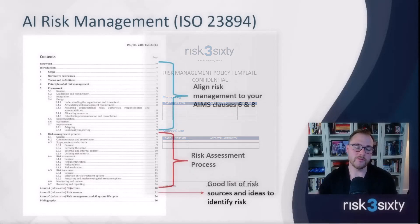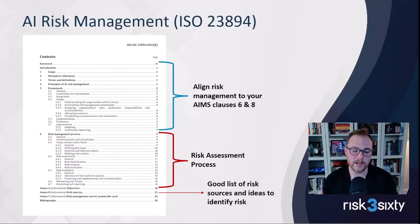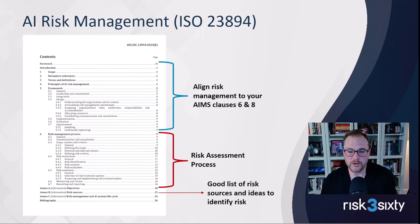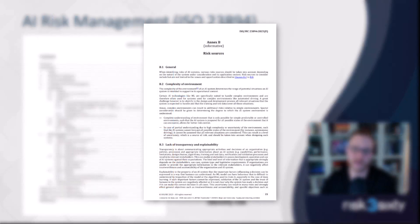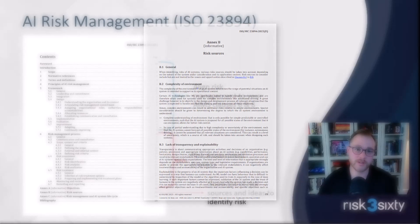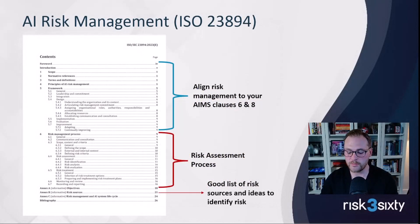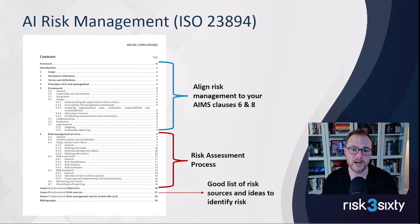One of my favorite things about ISO 23894 is the risk sources section. Sometimes when you're executing a risk assessment, it's hard to think through what you should even consider — where would you look, what types of things would you examine? The risk sources provide really good guidance for that. To put it more simply, ignoring the full framework, this is kind of how it looks.